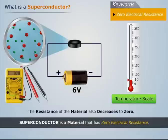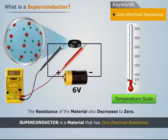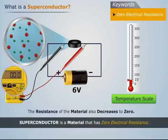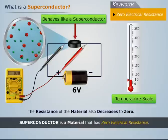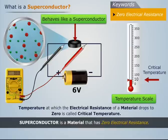As a result, the resistance of the material also decreases to zero and it starts behaving like a superconductor. The temperature at which the electrical resistance of a material drops to zero is called critical temperature.